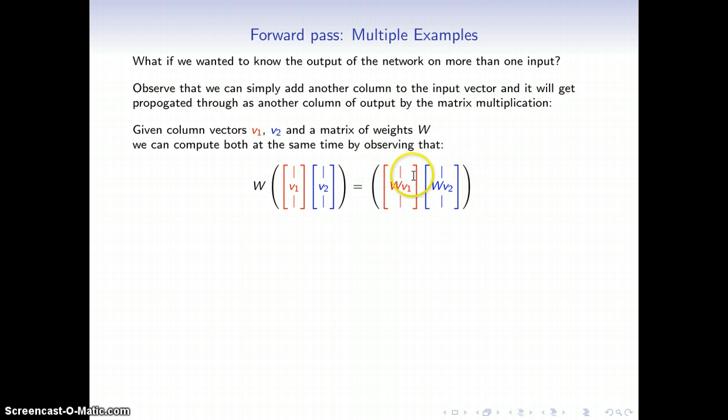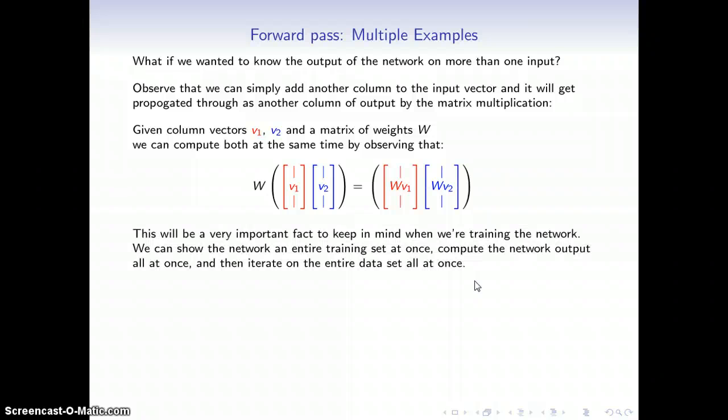So this between the parentheses is a single matrix, where each column is each input that I want to present to the network. So if you have a matrix built this way, and you multiply it by another matrix W, then the thing to note is that the result comes out just like this. You get a new matrix, which has the first column the same as weight times first vector. The second column is weight matrix W times second vector. So I've only shown it for two here. Obviously, this could be the entire data set, it could be a subset of the data set of the training data, it could be anything.